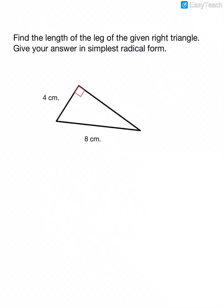Let's look at another one. This time, they've given us the hypotenuse and one of the legs, and they want us to find the length of the missing leg. It says to give the answer in simplest radical form, so this is not going to be a whole number — it's going to be a radical, and they just want us to simplify it. We know that the hypotenuse, which is the side across from the right angle, is my C. I'm going to name the leg that's 4 centimeters as A.